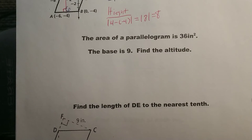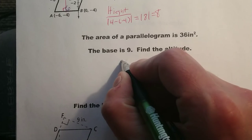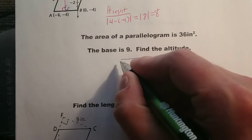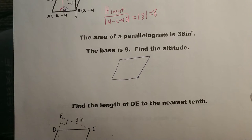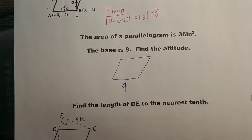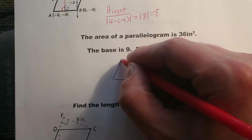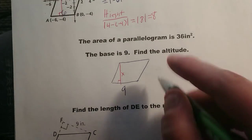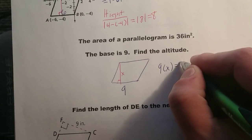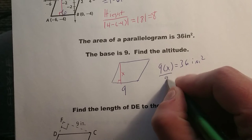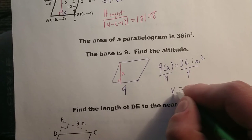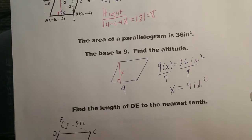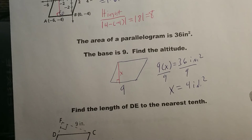The area of a parallelogram is 36 inches squared and the base is 9 — find the altitude. I'll sketch a parallelogram with base 9 and unknown altitude x. Since area equals base times height, 9 times x equals 36 inches squared. Dividing both sides by 9, x equals 4 inches. You can go vice versa too — if they give you the altitude, you can find the base.